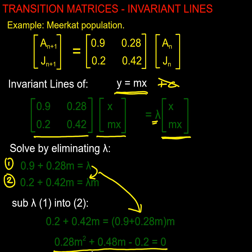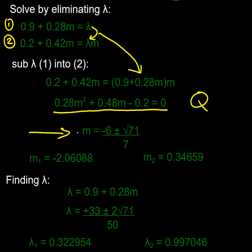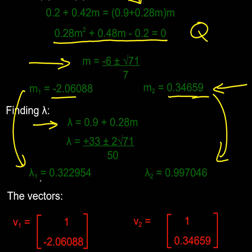I've got a quadratic in m, the gradient, and I get two solutions. One has a gradient of -2.06 and the other has a gradient of positive 0.34659 - we've seen that number before. What about the multipliers that fit with those? If I substitute in m_1 and m_2, I get lambda_1 is 0.3229 and lambda_2 is 0.997, very close to 1. If I wrote the m's out in vector form I get these two vectors.